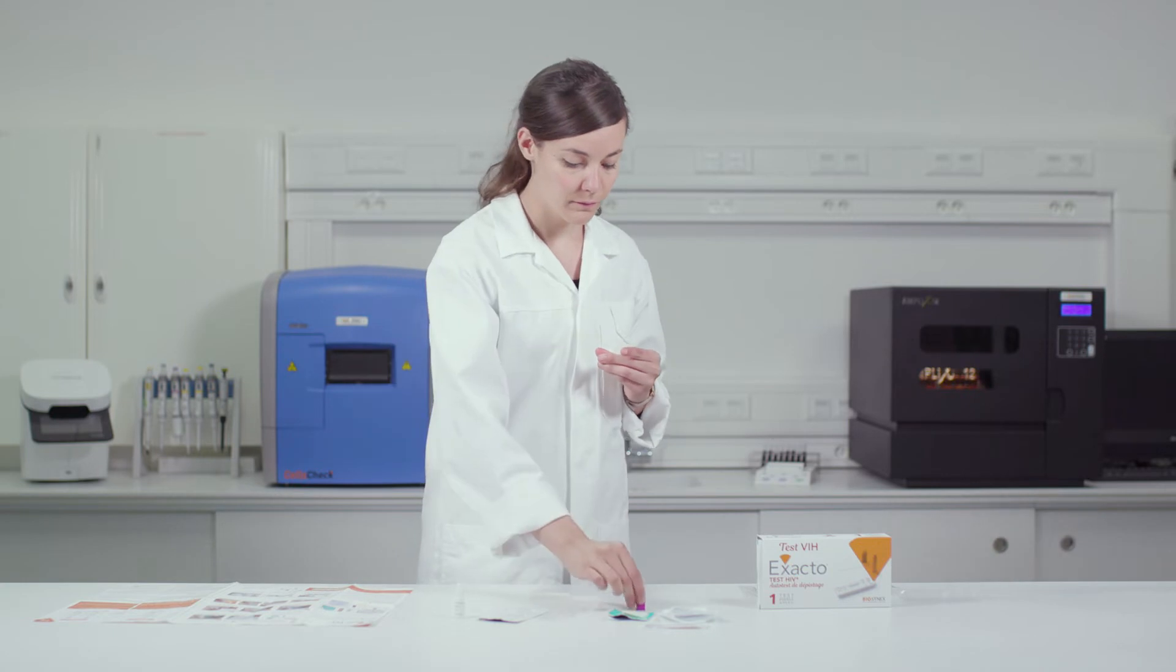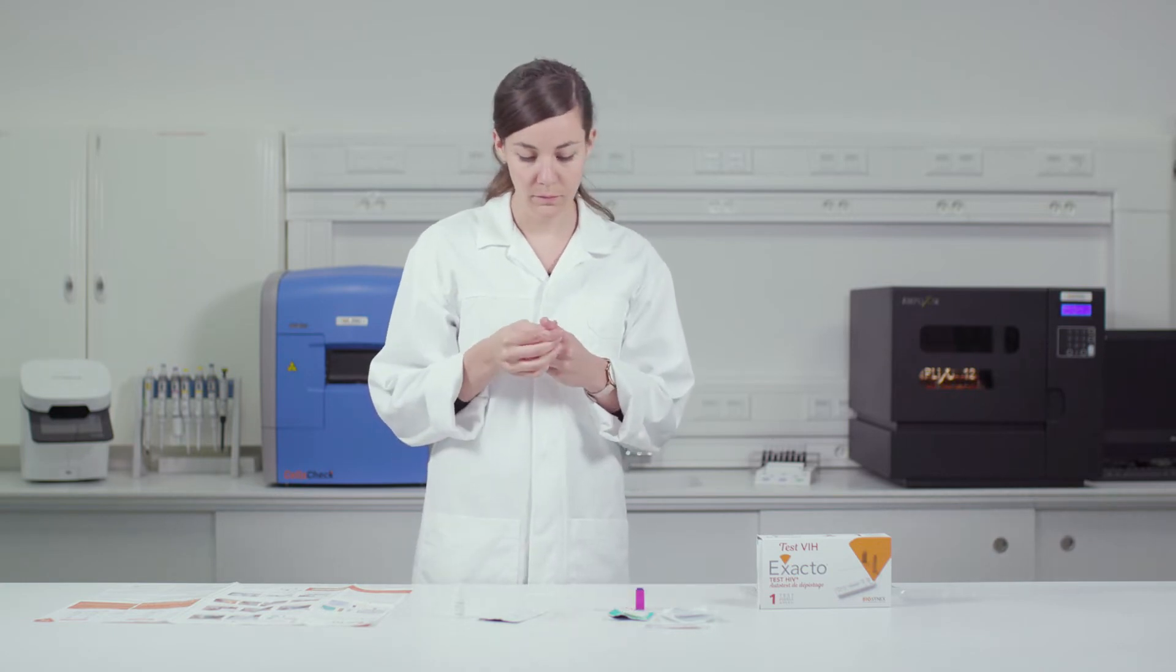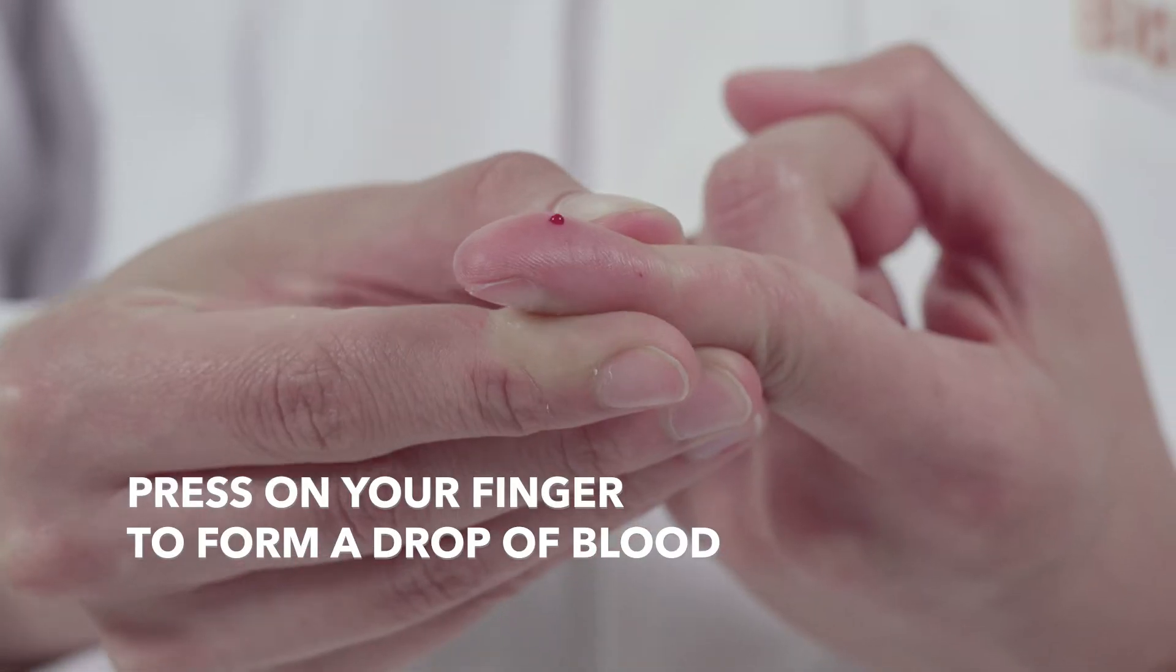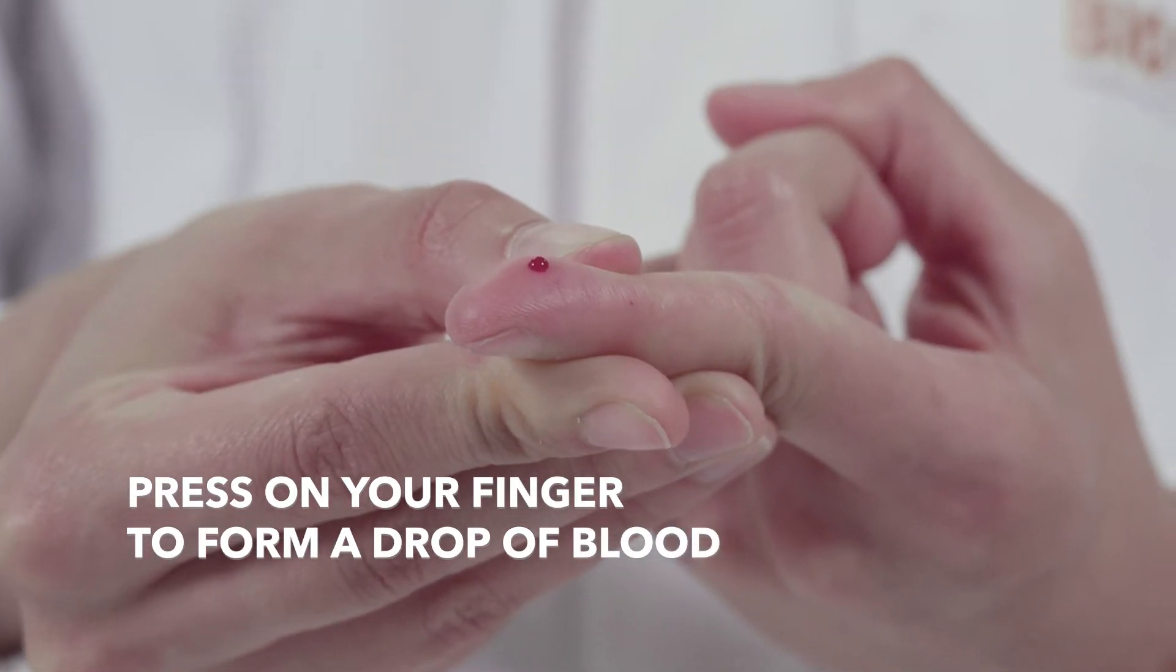To facilitate the sample, prick the side of your finger. There is more blood flow and it is less sensitive. Press on your fingertip so that a large drop of blood forms for the sample.